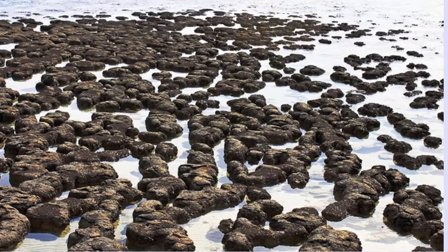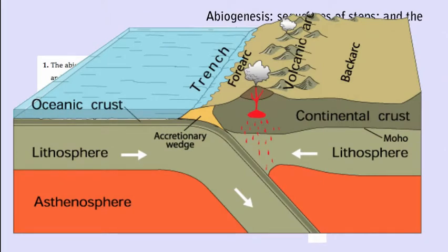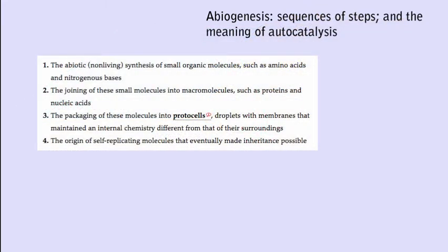Most of the Earth's crust has been recycled many times as a result of subduction, where two plates pushing against each other results in one diving below the other and melting in the Earth's mantle. We are lucky to have such places as Australia that are tectonic dead zones, not much geologically happening there for the entire history of the Earth.